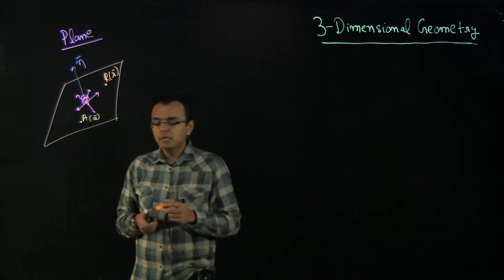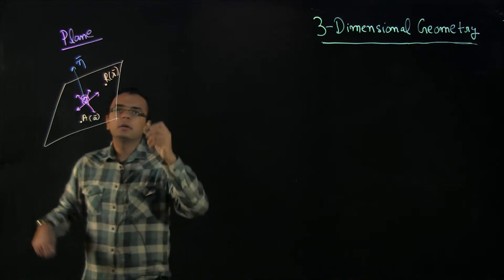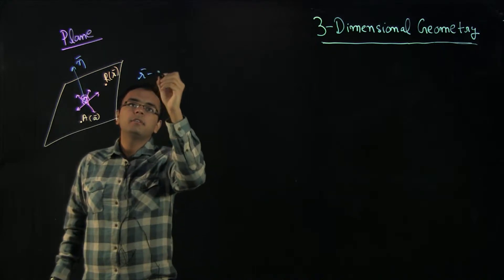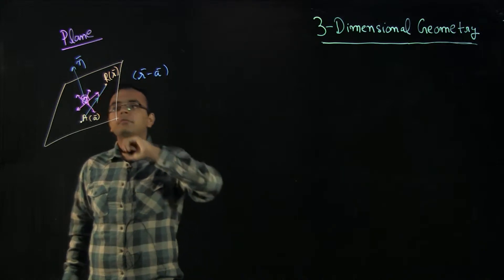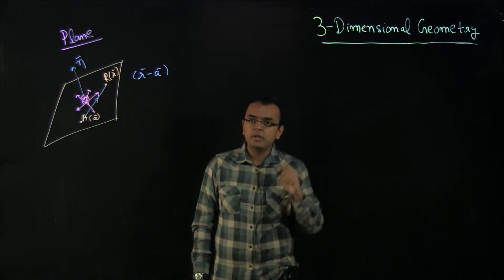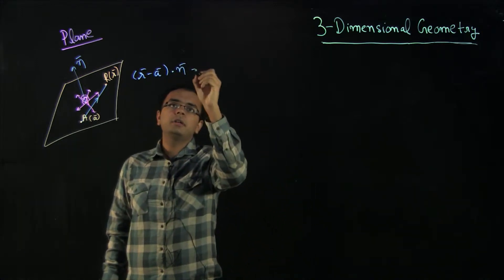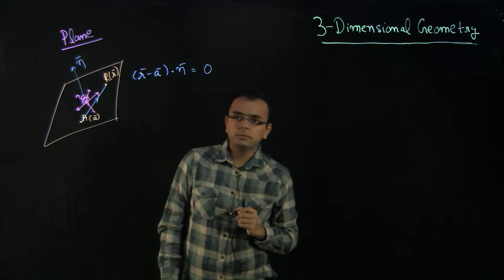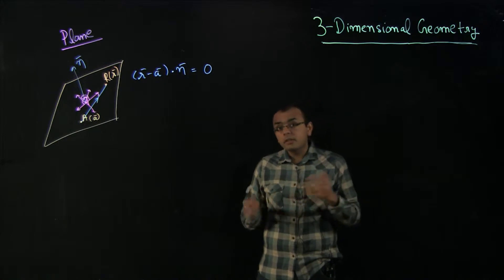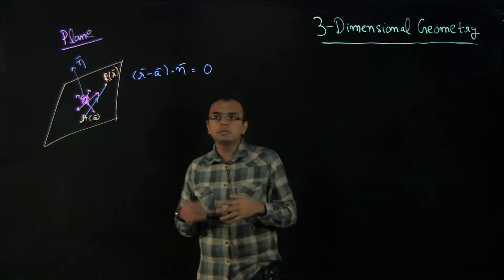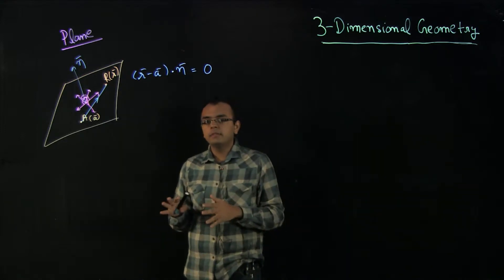But how do we write the equation of this? You can write this equation by recalling that R vector minus A vector would be perpendicular to n vector, and the condition for perpendicularity is that (R − A) · n = 0. So this is the equation of a plane. This is not a very straightforward-looking equation because there is a dot product involved. It was a little more obvious when you saw it in the straight lines vector form, but it becomes more obvious if you write this equation in coordinate form.